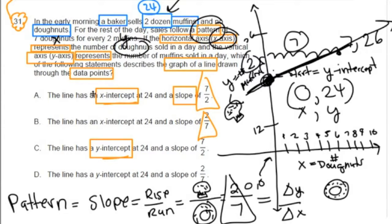this is our y-intercept. So, for that reason, we cross out A and B, because these are leading with the x-intercept. And our y-intercept, our starting point, is here at (0, 24).